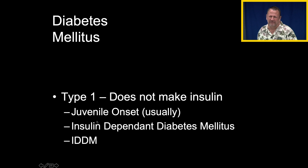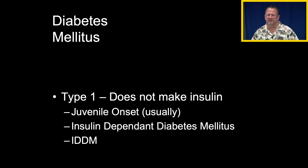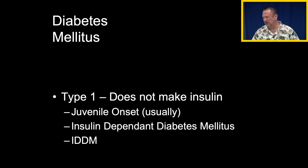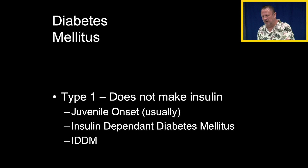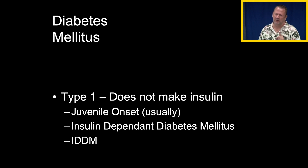In older literature, type 1 was called juvenile onset because it's more common to see it in children. However, we're seeing more type 1 diabetes in adults, so we don't really call it juvenile onset anymore. Type 1 diabetes is managed with insulin. Sure, diet and exercise are important, but insulin and glucose regulation are the most critical things for a type 1 diabetic.